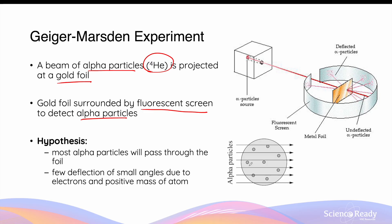However, the deflections, if they occur, will have a very small angle because the electrons have a much smaller mass compared to alpha particles. And since the positive mass of the atom is neutralized by the negative charges of the electrons, theoretically it will not cause any deflection of the alpha particles.